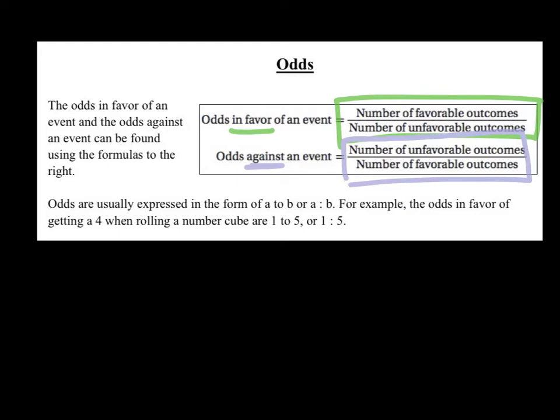For example, the odds in favor of getting a 4 when rolling a number cube are 1 to 5, written out or 1 colon 5. So there's 1 number 4 on a cube, so that's the 1 thing that is favorable. There's 5 numbers that are not a 4, that's the unfavorable. Together, 1 plus 5 add up to the 6 numbers on a die.